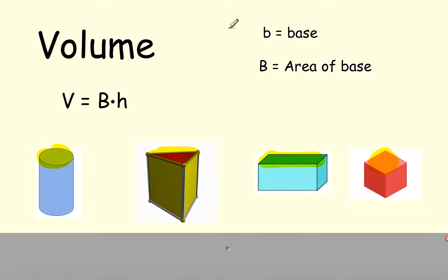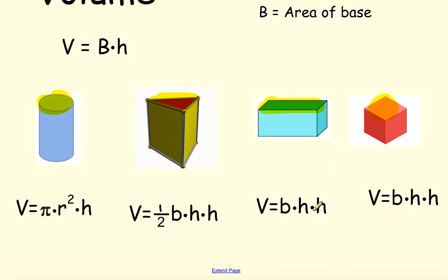So then the volume formulas are going to be simply, instead of writing this capitalized B, we're going to replace it with the formula for the area of the base. So let's take a look. The formula, then, for the volume of a cylinder, is I simply want to replace this capital B times it by the height of the whole cylinder. So right here, here's how you find the area of a circle and times it by the height, which would be the height of the cylinder.